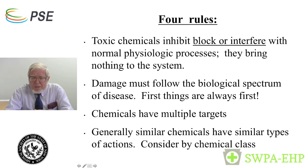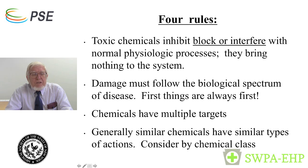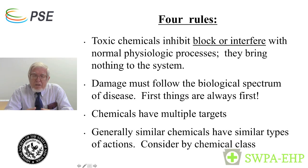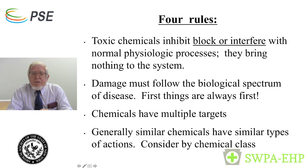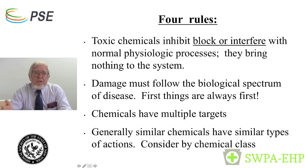There are four basic rules in toxicology. First, toxic chemicals inhibit and/or block normal physiological processes. Chemical toxins bring nothing to the system — you cannot make a liver act like a kidney by a toxic agent. If you can determine what's being inhibited, you can determine the toxic agent's action. Second, the action must follow the rational biological spectrum of disease: you damage an enzyme and the effects are seen later in time. The effects of a damaged tissue may be reflected in effects on other organs downstream.